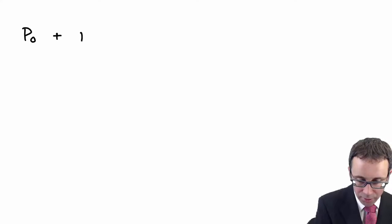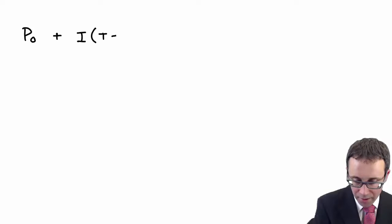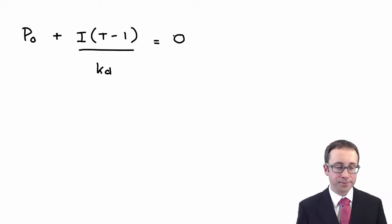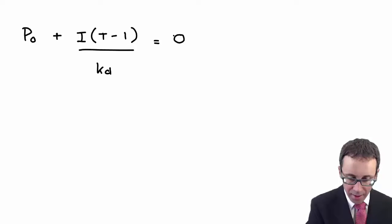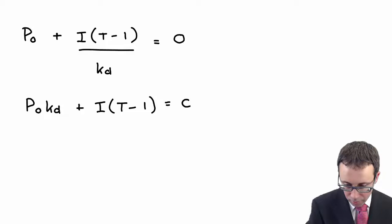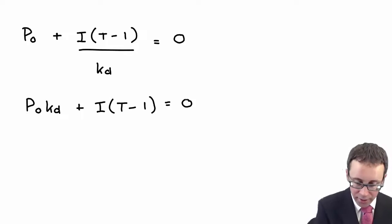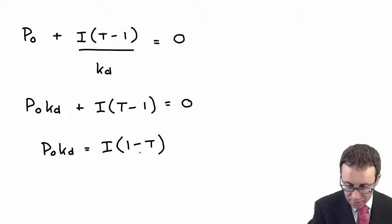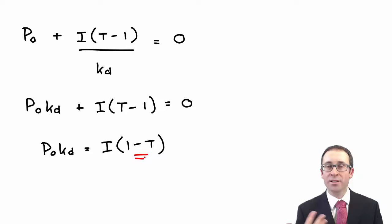So taking that on board, what you've got is P0 plus the interest multiplied by the tax charge less one divided by KD equals zero. We can go through there and multiply everything by KD. Then you can take the interest figure to the other side. Just be careful that when you take the interest and the tax, it twists itself around, because we changed the sign.